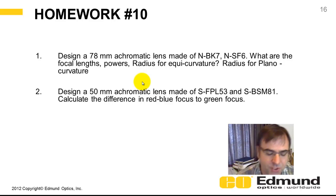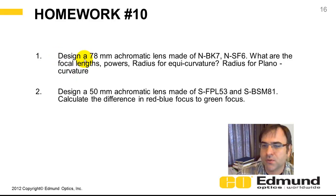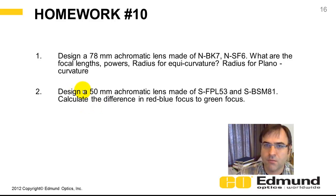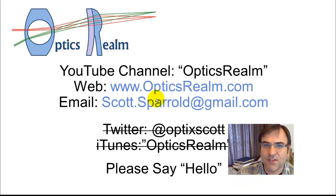Here's homework number 10. The first question asks you to design an achromat made of BK7 and SF6, and solve for focal lengths, power, and radii for two cases. Note that in the previous homework the powers were slightly off because calculations used one-millimeter-thick lenses rather than zero thickness. The second problem is a bit of a trick question intended to prepare you to understand secondary color: design an achromat with FPL53 and BSM81, then find the difference in the red-blue focus versus the green focus — it will be very interesting. That's it. Thanks for tuning in. This is Scott from Optics Realm. Be sure to like the video, post comments below, and tell your friends. Thank you very much.